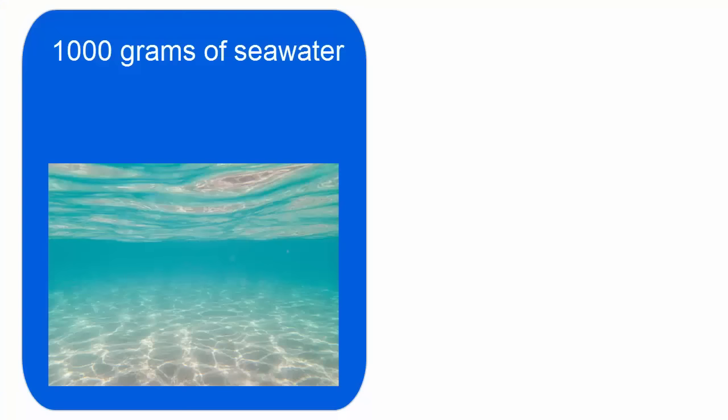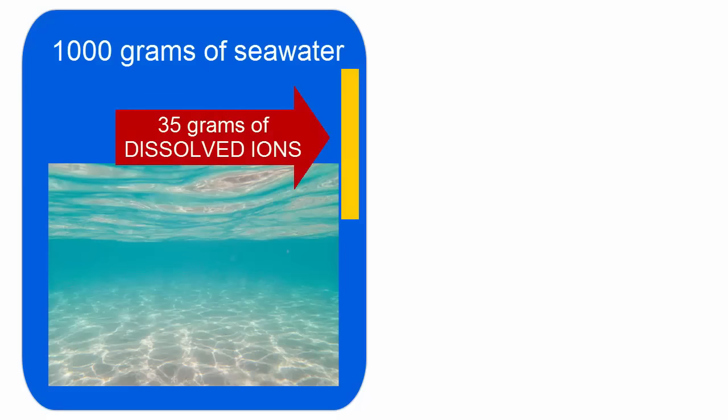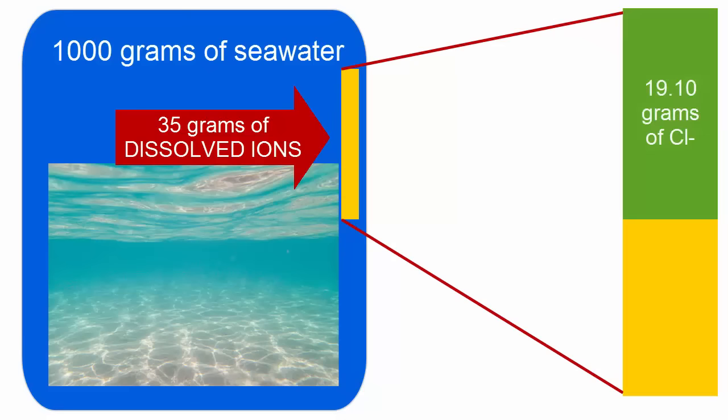This image shows you 1 kg of water and what 35 pieces of that look like in comparison. For that average seawater of 35 parts per thousand salinity, 19.10 of those 1,000 grams are dissolved chloride ions, Cl minus. 10.62 are sodium ions.